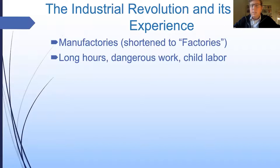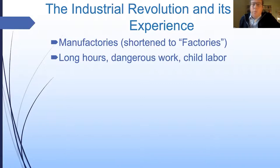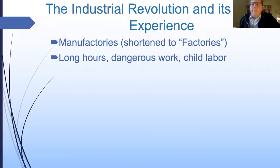Children as young as five or six were often employed in these factories. They didn't go to school; families had children specifically so they could work and contribute enough money for the family to survive. Children were prized partly because their smaller fingers could operate delicate machinery, but mainly because they could be paid less. A seven, eight, nine, or ten-year-old child could be taught to feed yarn into a machine and paid even less than an adult.